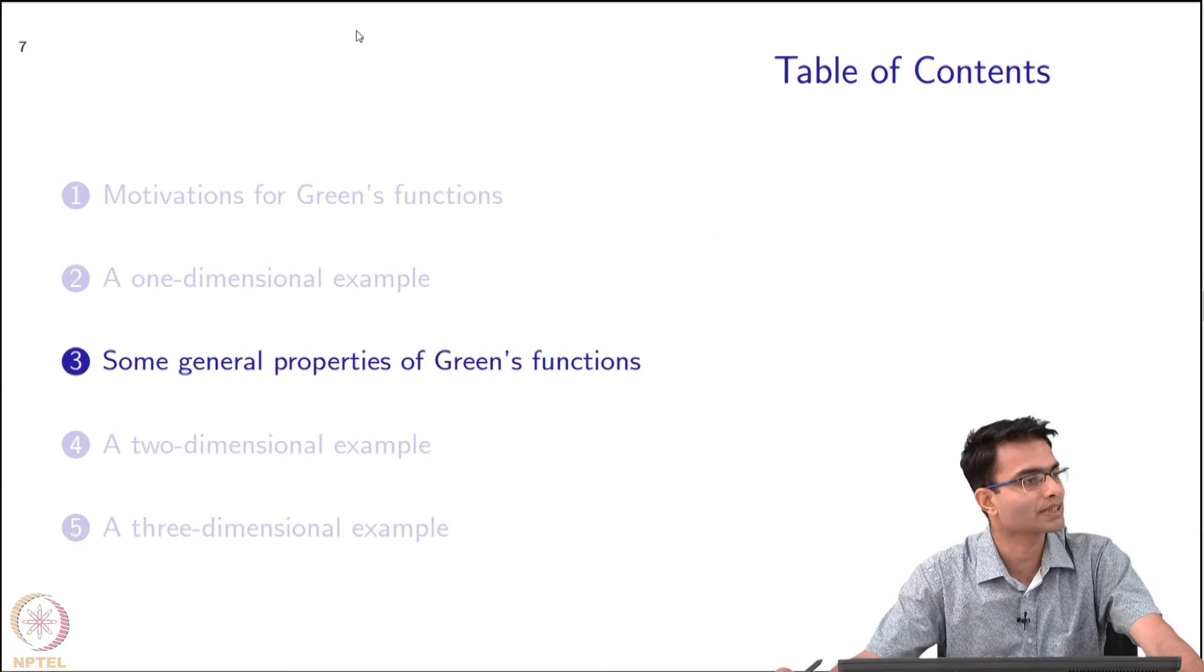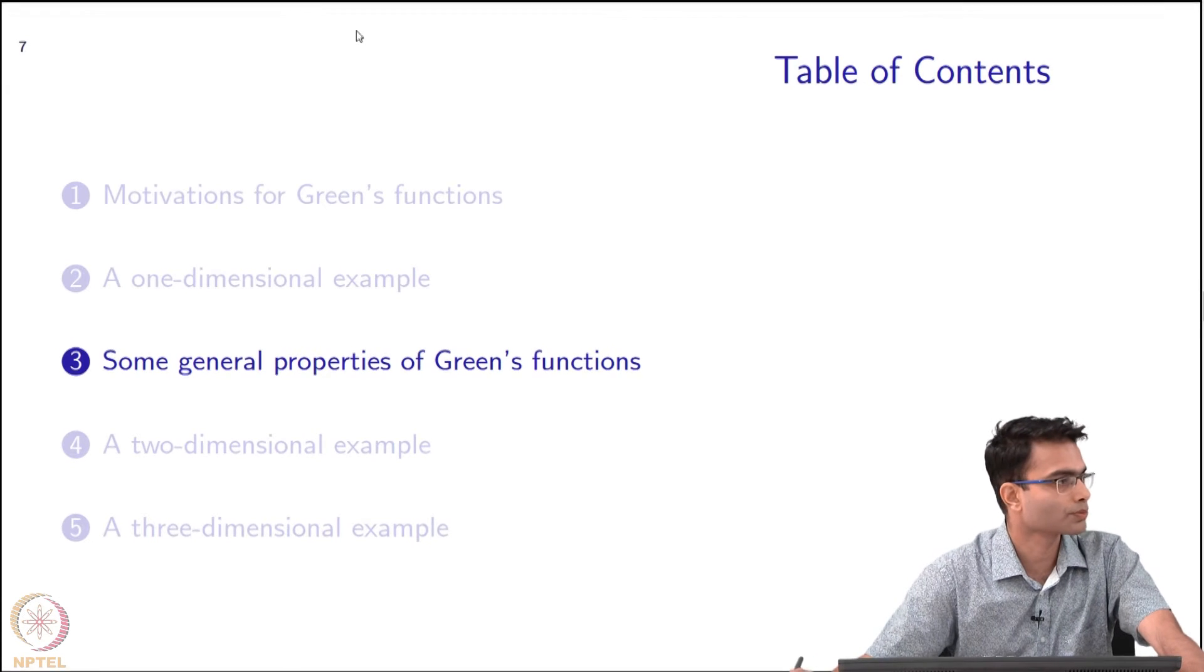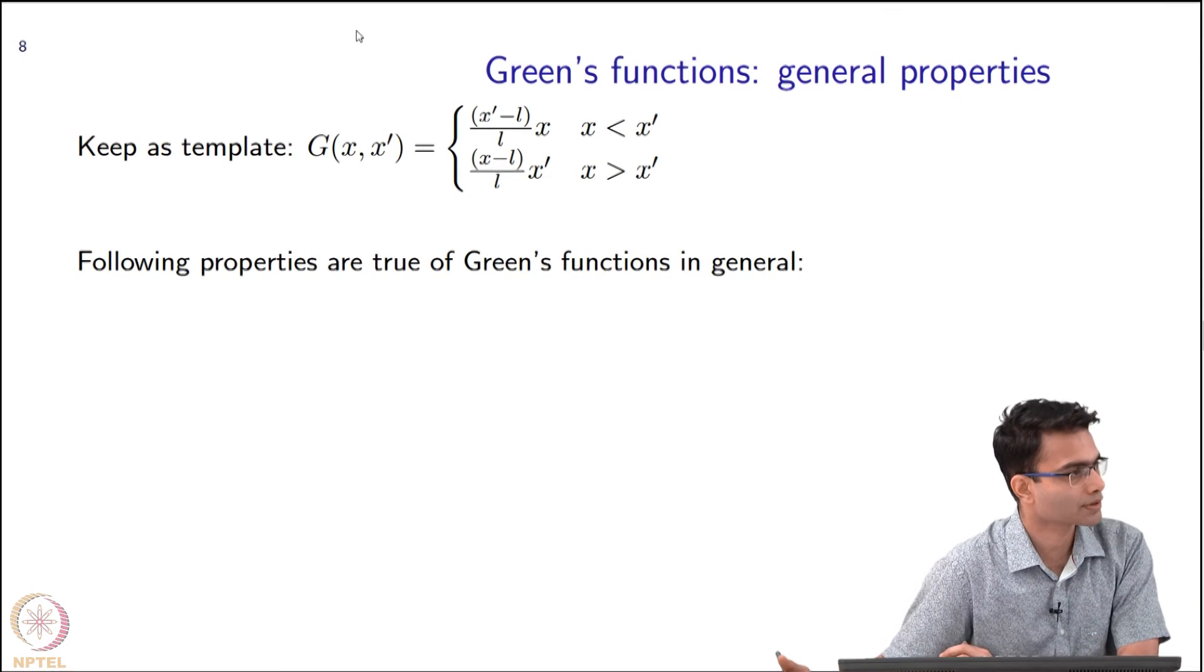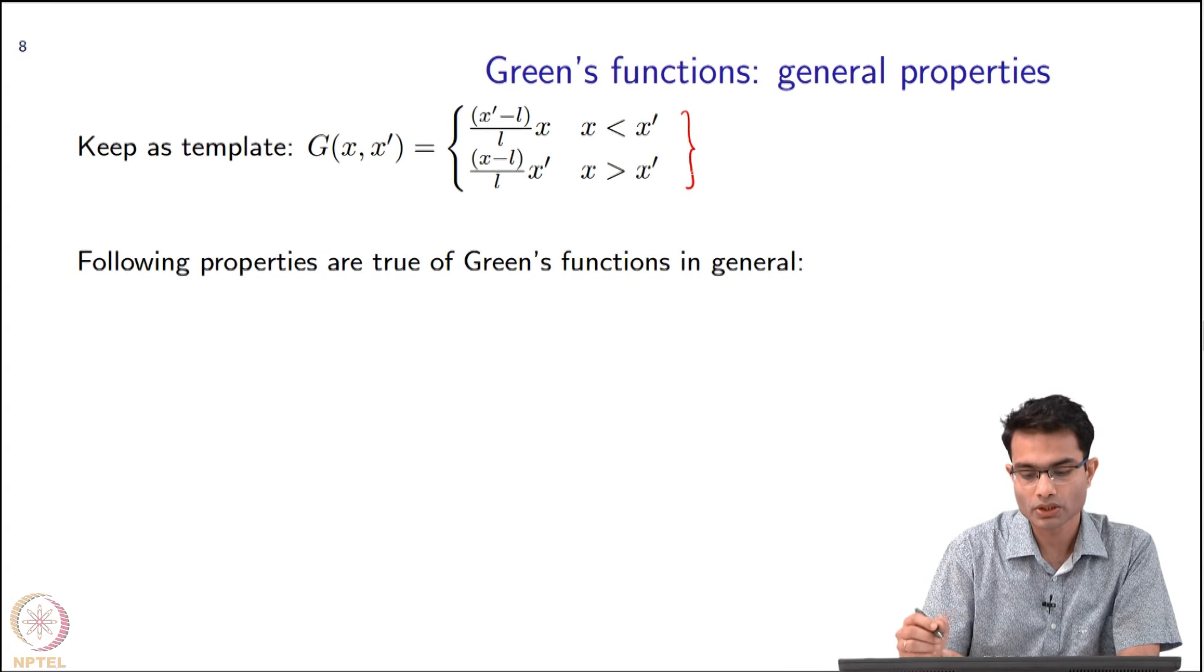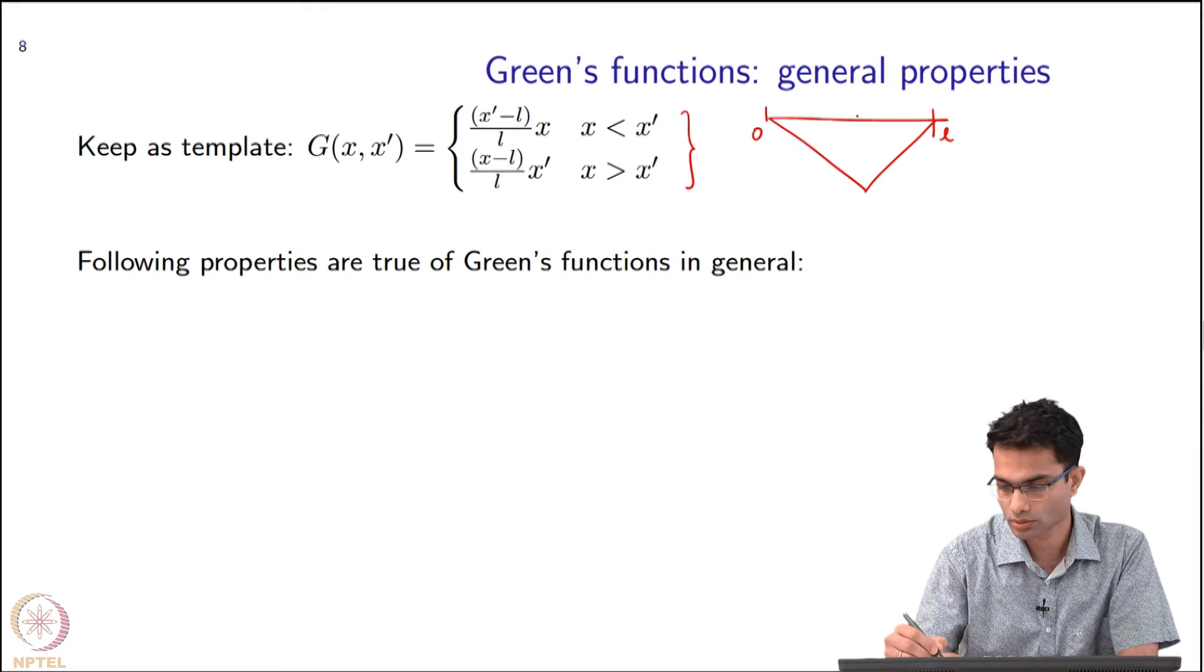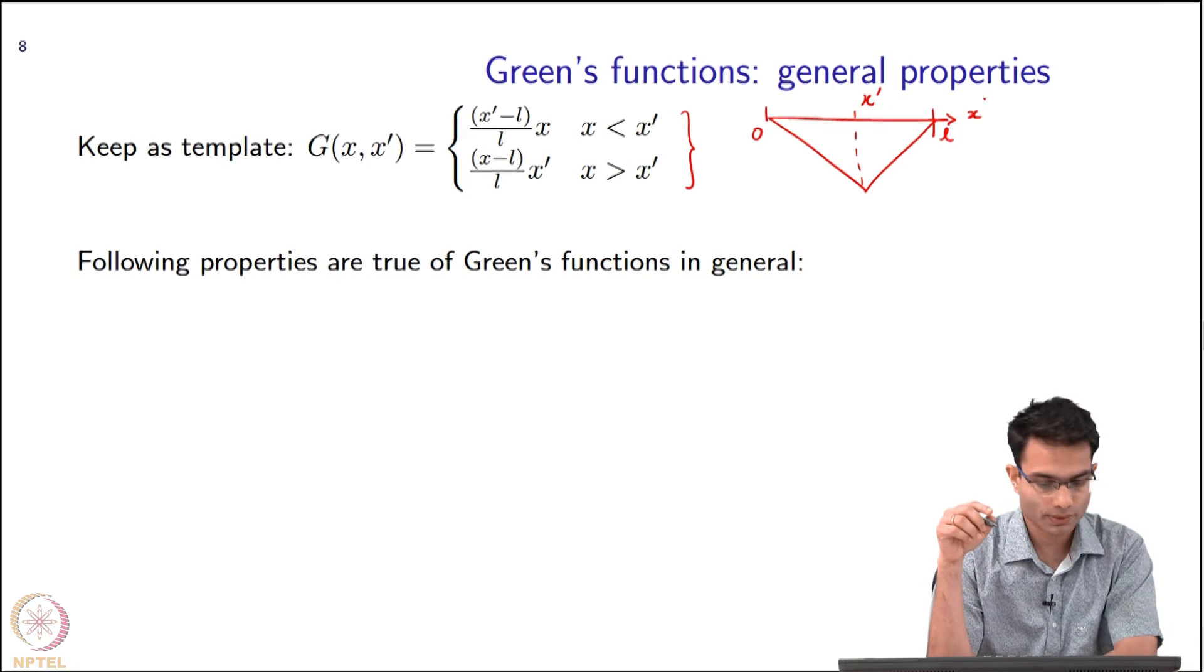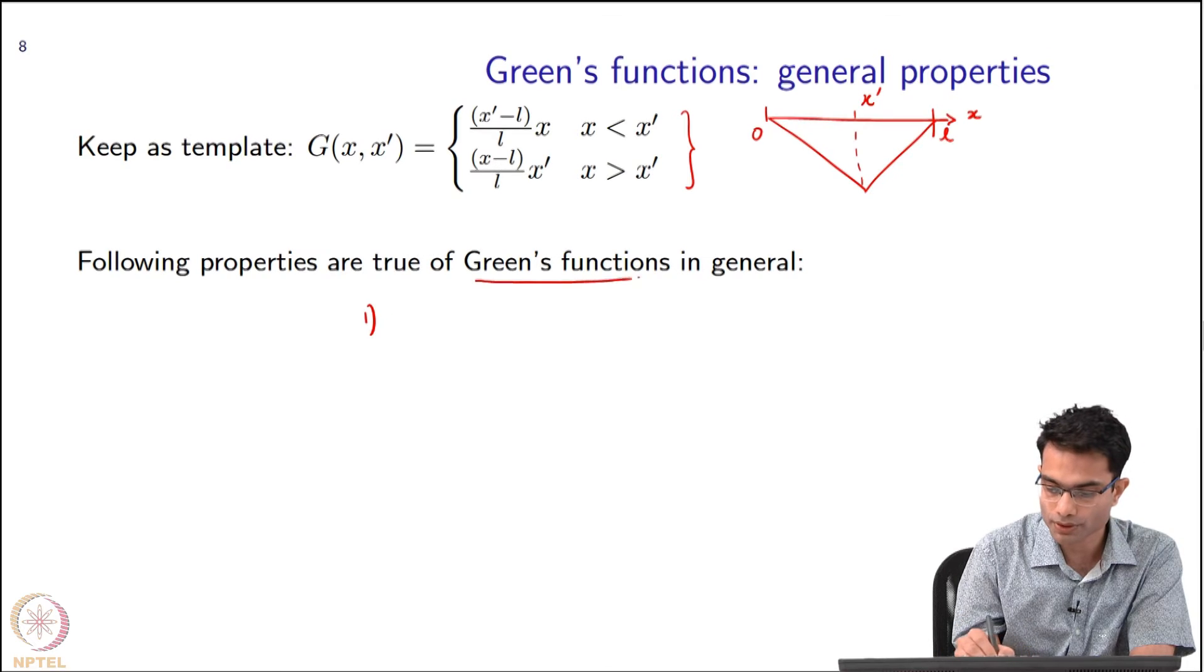We will continue our discussion about Green's functions. We have looked at 1D Green's functions. What I will do now, before we go to 2D Green's functions, is summarize a few general properties that Green's functions obey in general. This is the Green's function we had from yesterday's class. When we plotted it, it looked like something like this. There are some general properties.